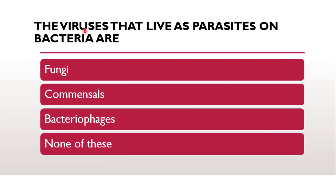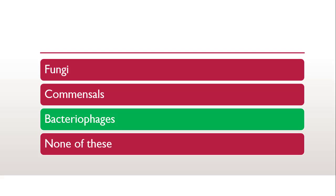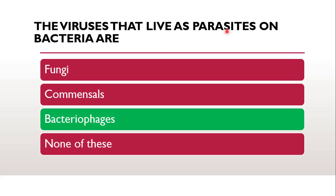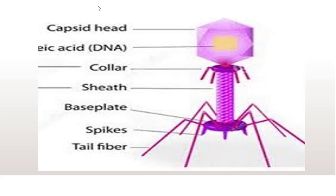The next question is: viruses that live as parasites on bacteria are — whether they are fungi, whether they are common cells, whether they are bacteriophages, or none of these. The correct answer is bacteriophage. Viruses which live as parasites on the bacteria are called bacteriophages, and this is the structure of bacteriophage which you already know.